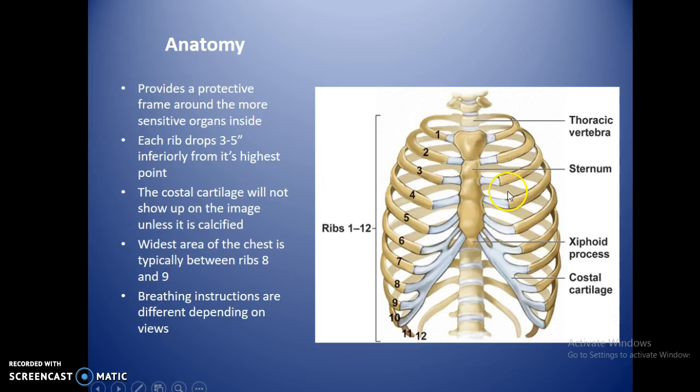Each rib drops about three to five inches inferiorly from its highest point. Be aware of that when doing chest x-rays and rib exams. Costal cartilage will not show up unless it's calcified — in older patients you can sometimes see this calcification where it gets a little more dense and can be outlined better.